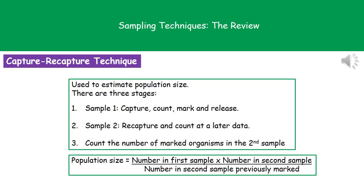Once we have data, we need to carry out calculations. One of the most important is the capture-recapture technique. For example, to estimate the number of grasshoppers in a field, we go out with a net, collect samples, count them, mark them, and release them back. We return a day or two later, repeat the capture, and count the total number caught and how many were previously marked. The calculation is: first sample size multiplied by second sample size, divided by the number of previously marked individuals recaptured. This gives an estimate of the total population size.